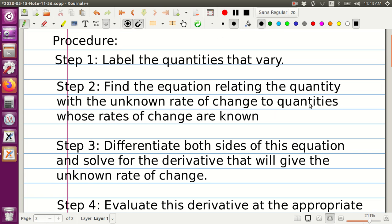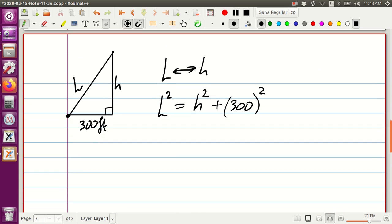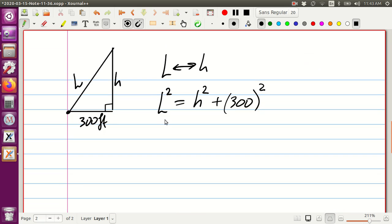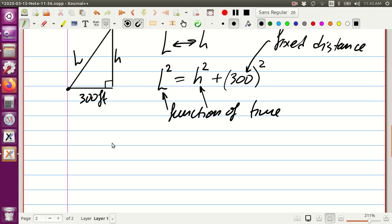Now step three, we need to differentiate both sides. Before we do that, let's understand that L is a function of time, and h is also a function of time. But 300 is a fixed distance because the camera is not moving. So let's try to take the derivative on both sides. We take the derivative of the left side and the derivative of the right side with respect to time.